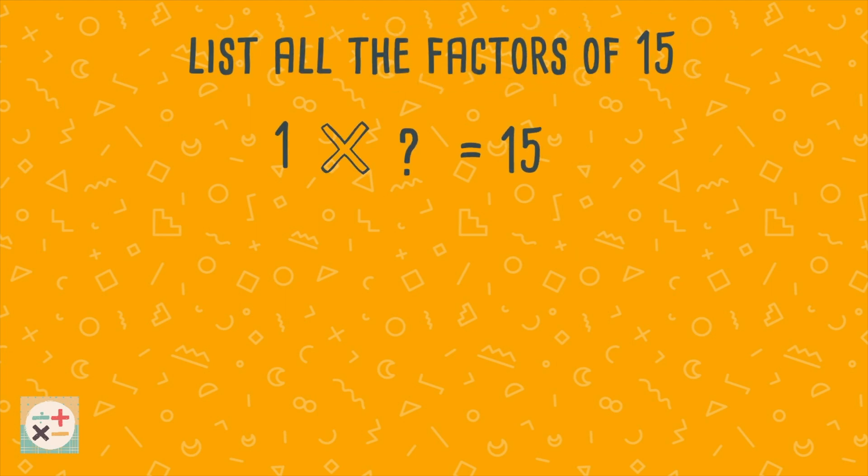Let's have a look at another example. In this example, some of the numbers do not divide into 15 exactly, such as the number 2. In this case, we can just cross them out, as they are not factors of 15.